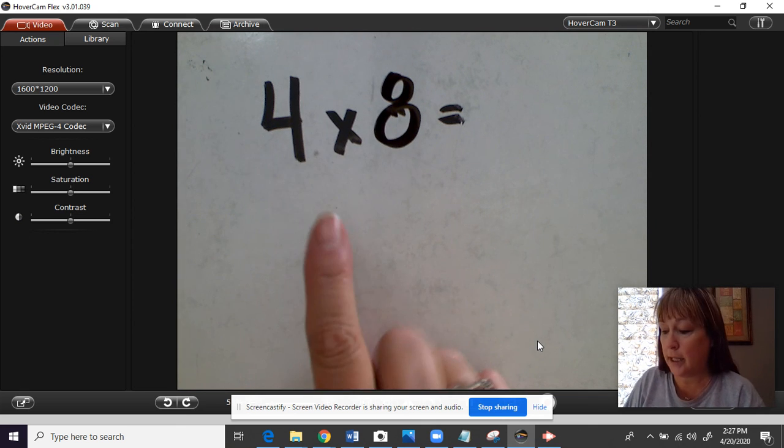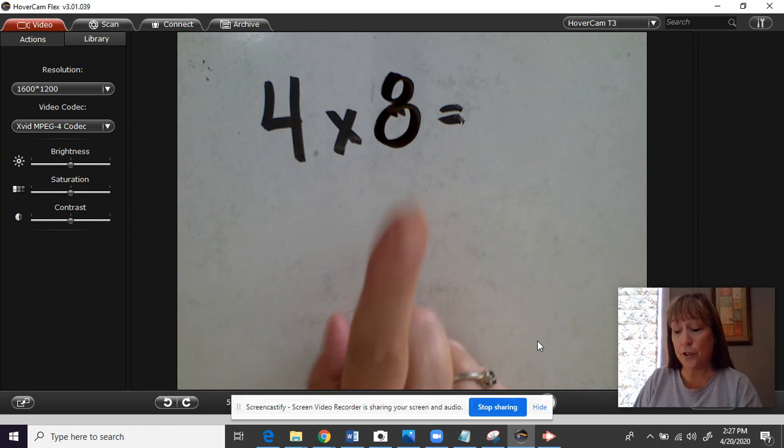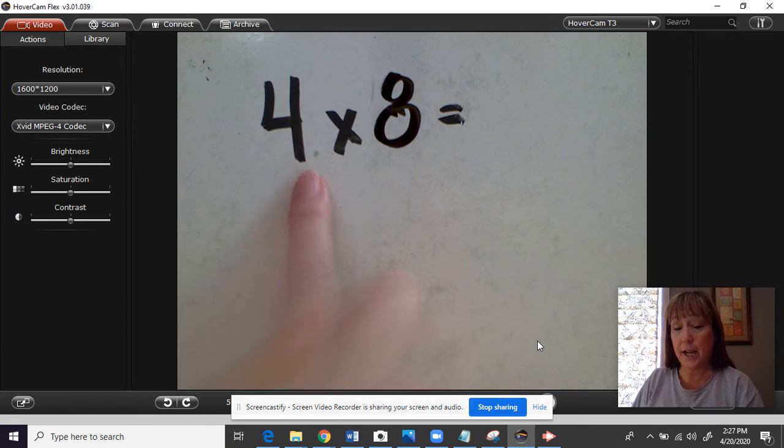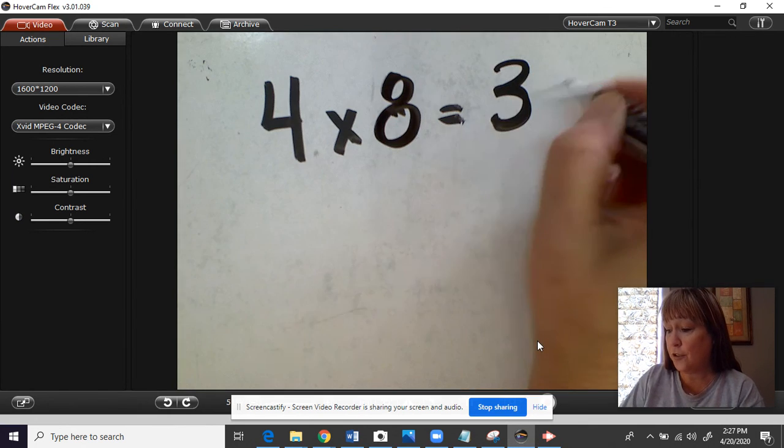Hi guys, today you're going to be multiplying whole numbers and decimals. For your first example, we have 4 times 8, and we know 4 times 8 is 32.